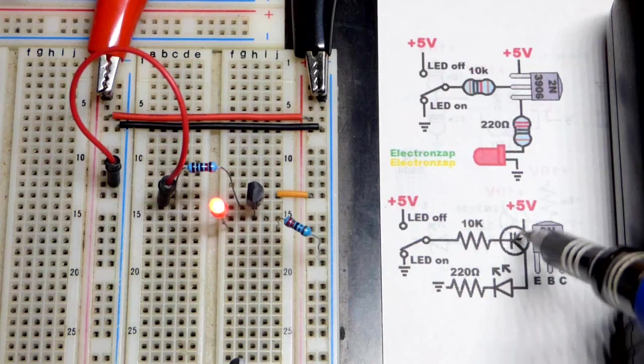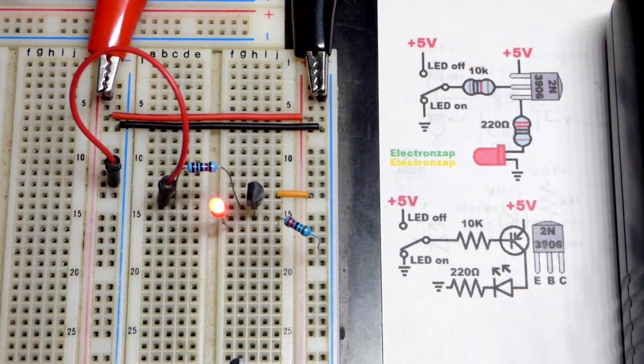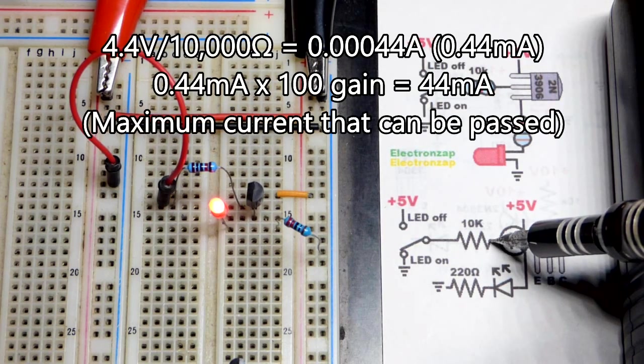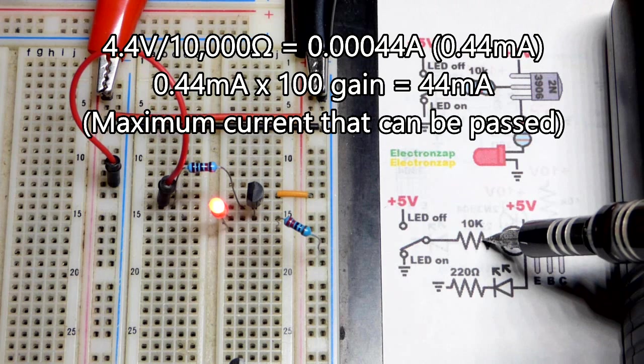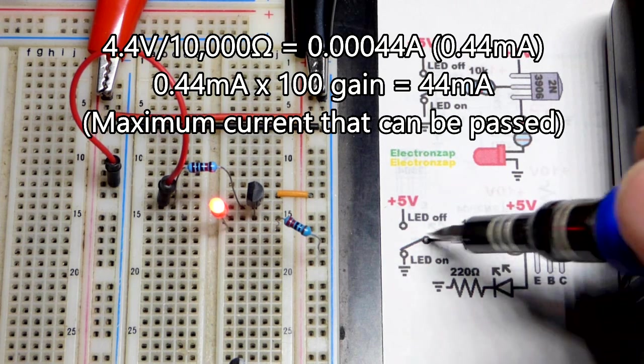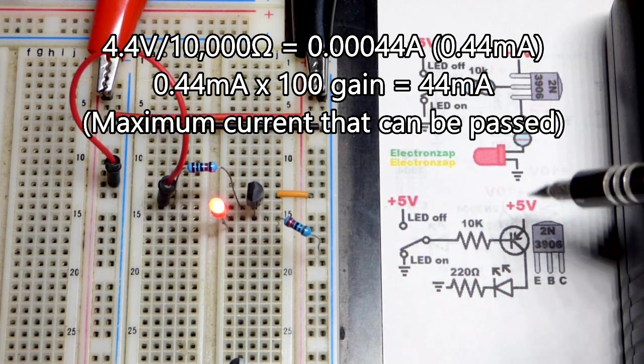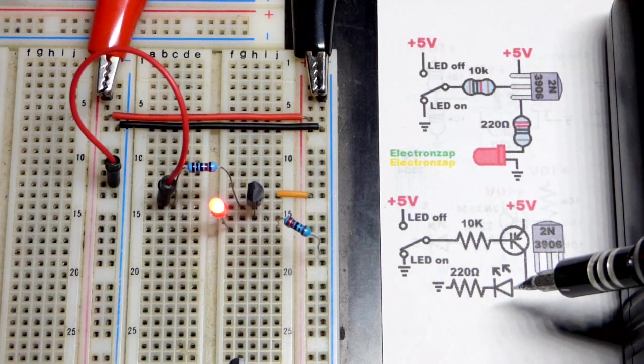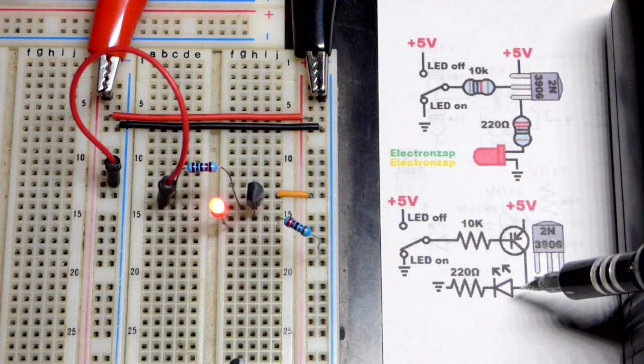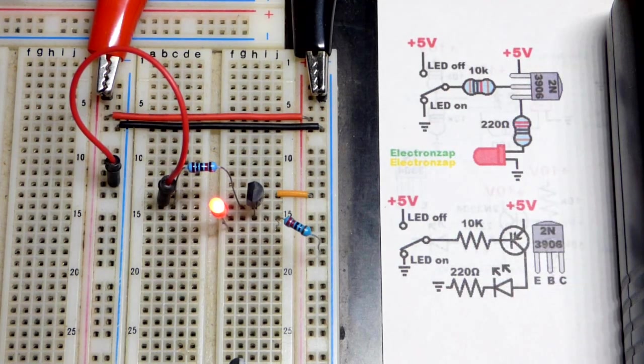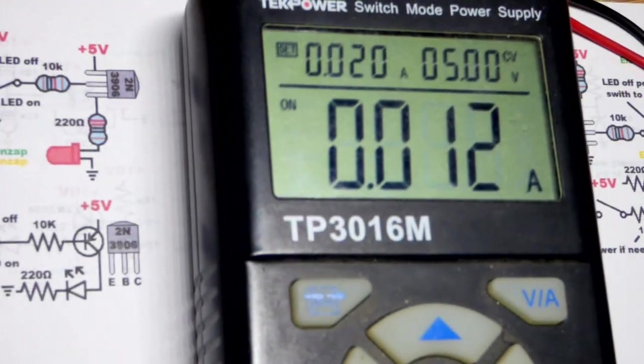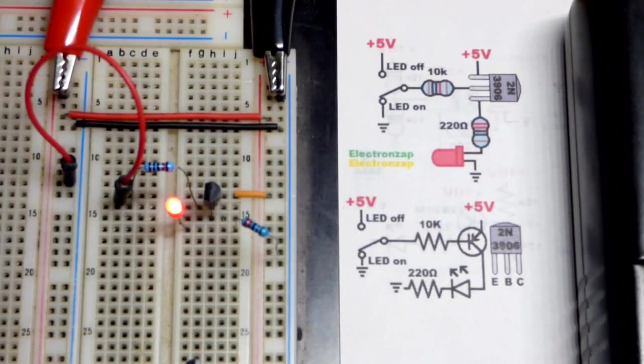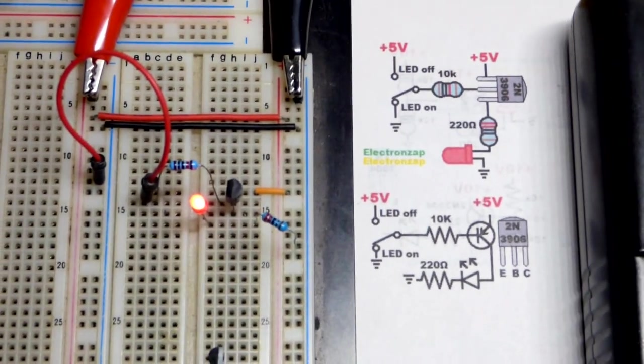As far as the load is concerned, the load will be what limits the current, not the transistor. So we have five volts, we're going to lose about 0.6 volts from base to emitter. A 10,000 ohm resistor is going to give us about 0.44 milliamps of current. If this will let a hundred times through, we could get like 44 milliamps of current, but with the LED and the resistor we have somewhere around 12 milliamps of current, maybe slightly less than 13, somewhere around that range.